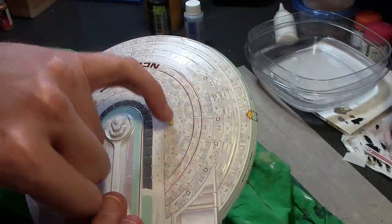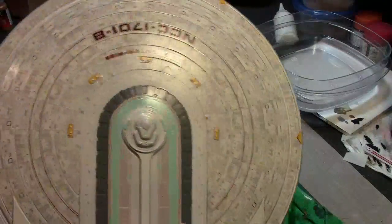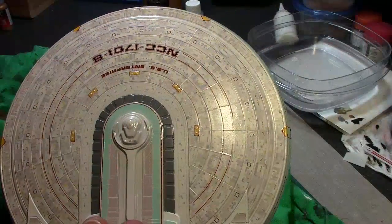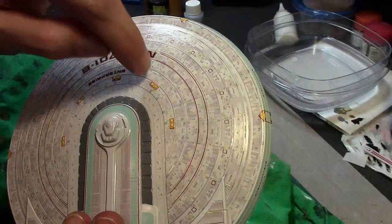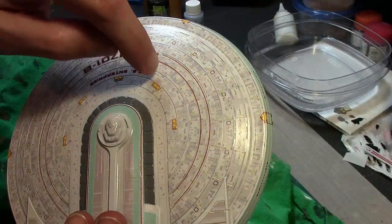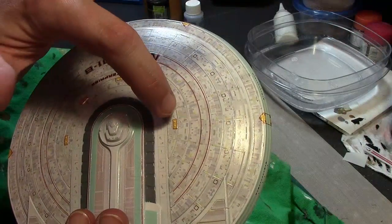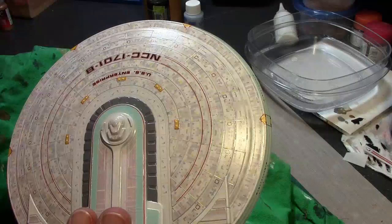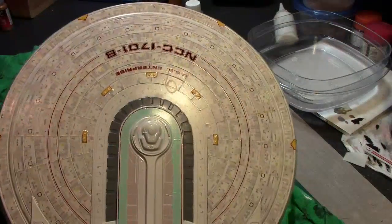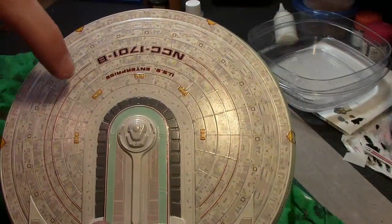The decals around here that come with the kit do not fit at all. They are way too big for some reason and also putting them over those little bumps, you have different ways you can do this. You could shave off the bumps and then put decal on and then put like a pinhead or something in this place.